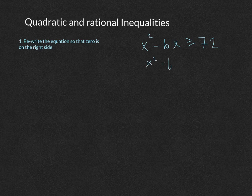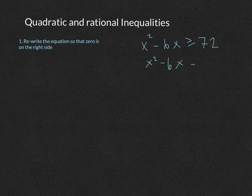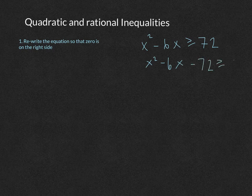You can only add and subtract things over. You can't do any multiplication or division. So we've got x squared minus 6x minus 72 is greater than or equal to 0.